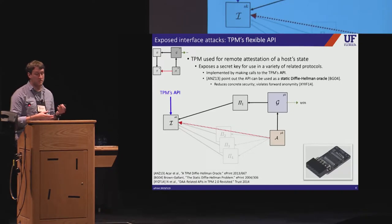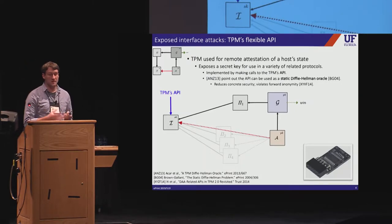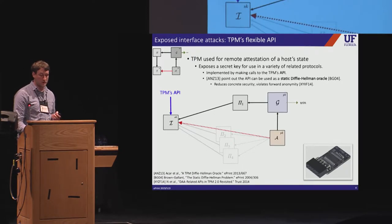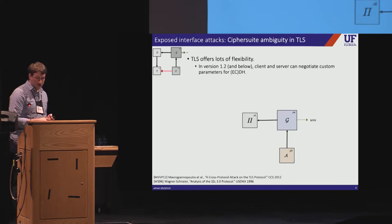Well, in 2013, Asara et al. pointed out that this API can be used as a static Diffie-Hellman Oracle for the secret key. This significantly reduces the concrete security of TPM's application, and it also violates some important privacy properties of these protocols.